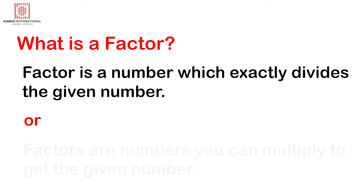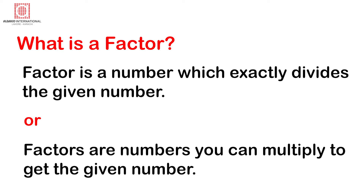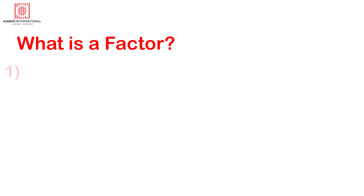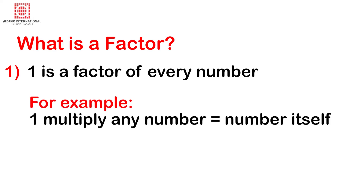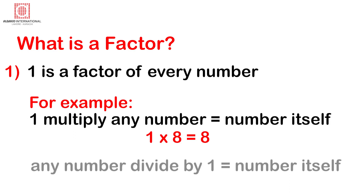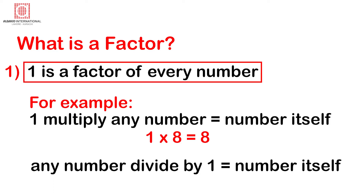A factor is a number which exactly divides the given number, or factors are numbers you can multiply to get the given number. Points to remember: Point 1 — 1 is a factor of every number. For example, 1 multiplied by any number equals that number itself, and any number divided by 1 equals the number itself.